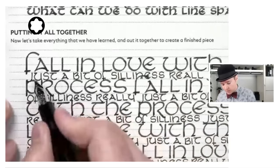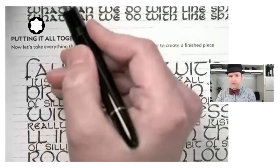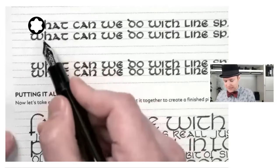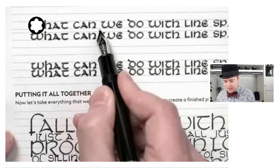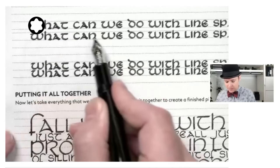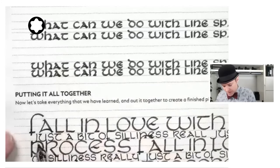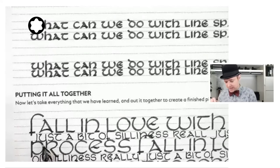Between those, I have added, so for the large letters, I'm following this idea. I have my fall in love with the process, I've made, I left half a space, and then I went fall in love with the process. But I want it to look super dense. So in the middle, I wrote just a bit of silliness really, half spaced with a different pen, or half sized with a different pen.